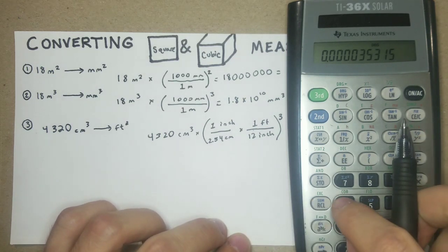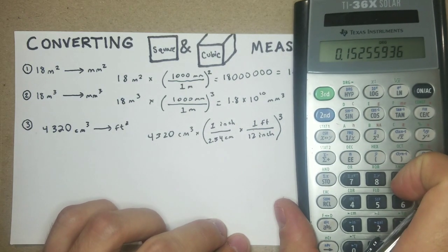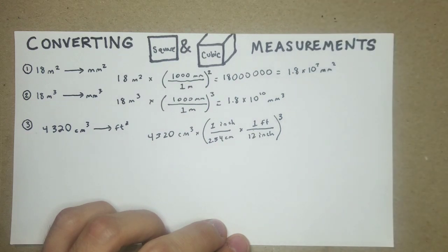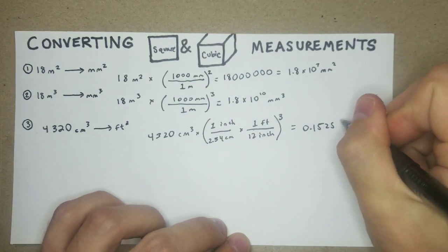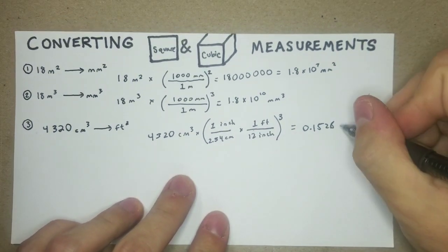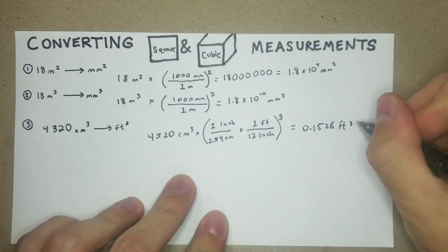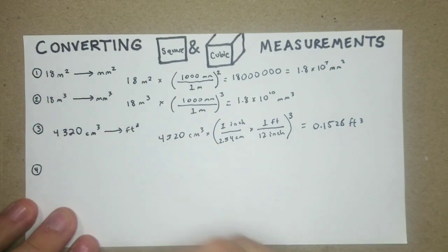Okay, so I get that really small number, and then that is what I'm going to multiply by 4,320. Come out with 0.1525, round up that to 6, and that's going to leave us with cubic feet. Okay, cool, so that one's not too bad.